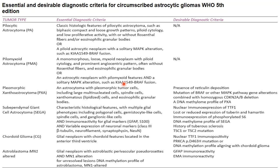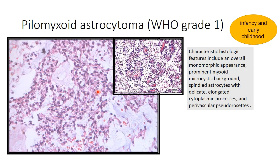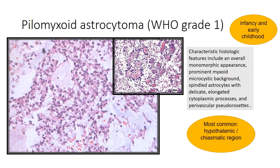The pilomyxoid astrocytoma shows a characteristic angiocentric growth pattern composed of a monomorphous population of cells with a typical myxoid background. The cells have characteristic elongated processes and a perivascular pseudorosette-like distribution. The tumor typically occurs in infancy and early childhood, most commonly affecting the hypothalamic and/or chiasmatic region. It is a CNS-WHO grade 1 tumor.